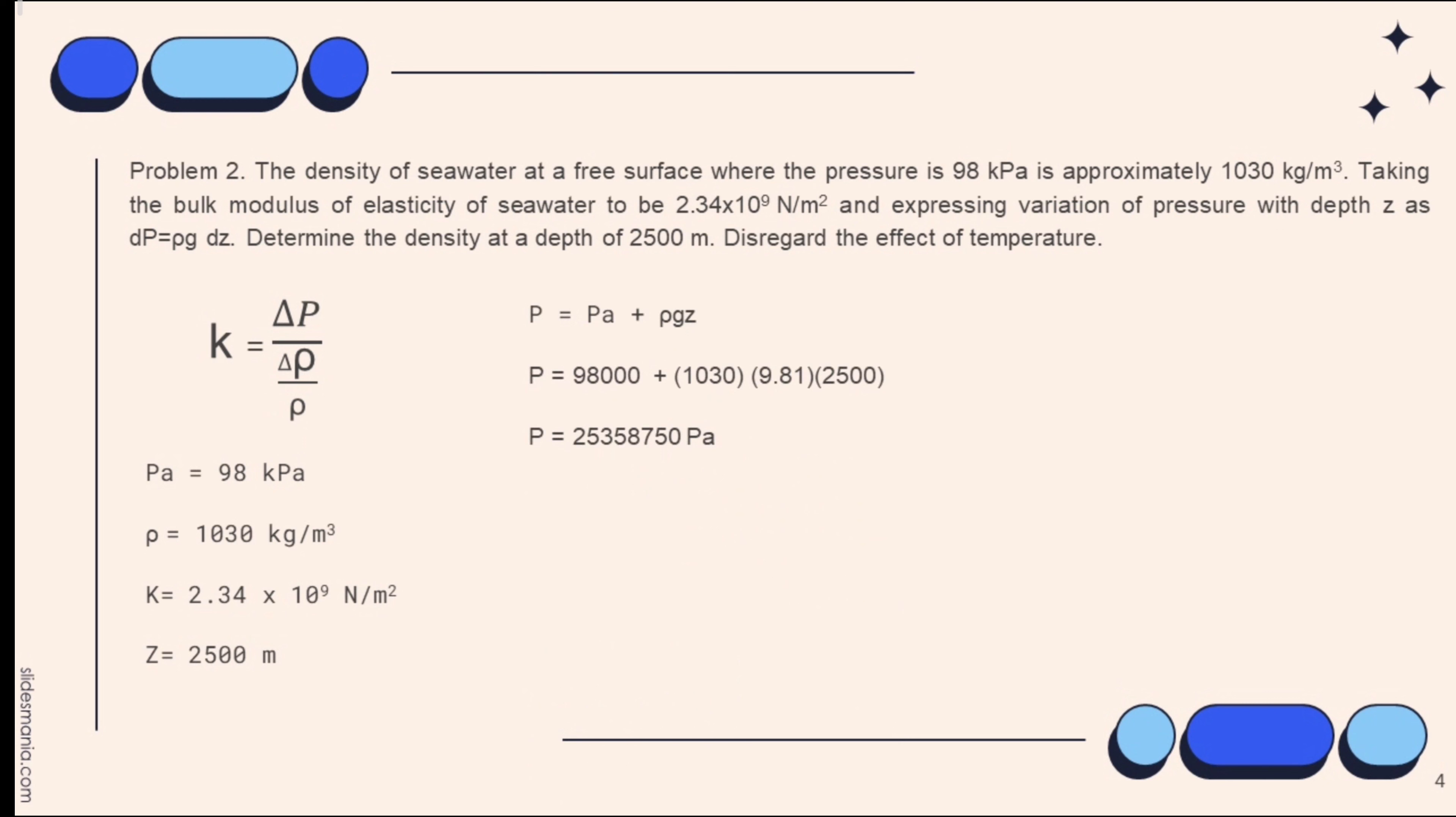But first, let's solve for pressure. Pressure equals atmospheric pressure plus density times acceleration due to gravity times depth z. Pressure equals 98,000 plus 1,030 times 9.81 times 2,500. Pressure equals 25,358,750 pascal.